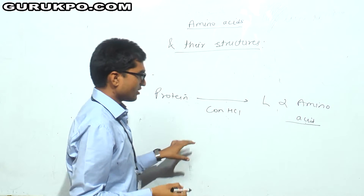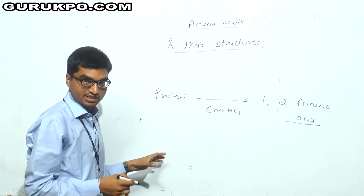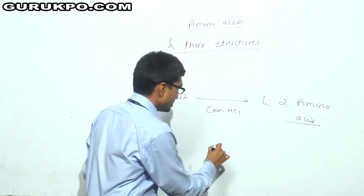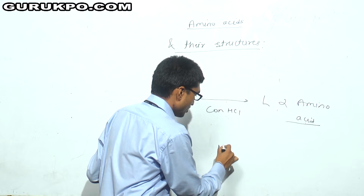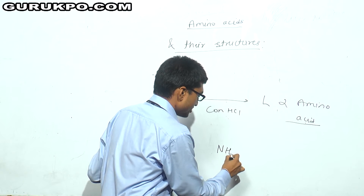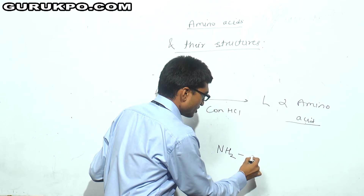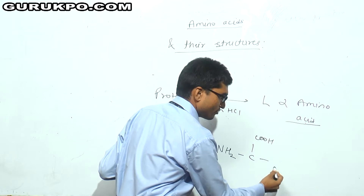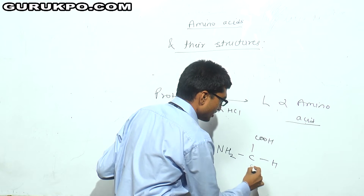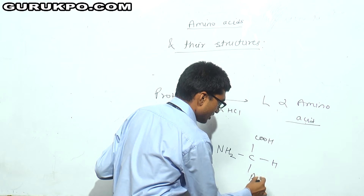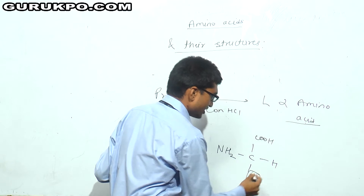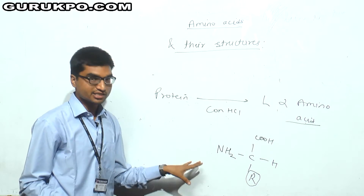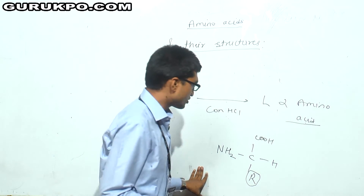When we see the structure of the amino acid, it is having an NH2 group, a COOH (carboxyl) group, an H, and an R group. This is the basic structure of amino acid.